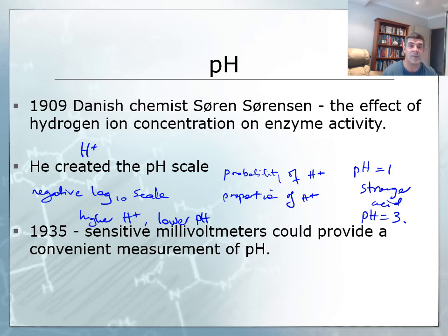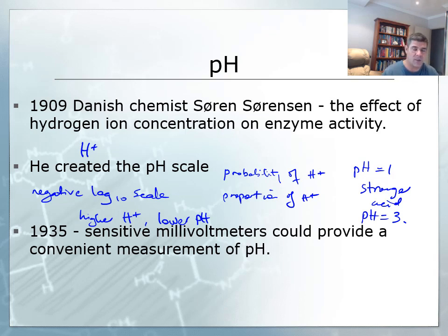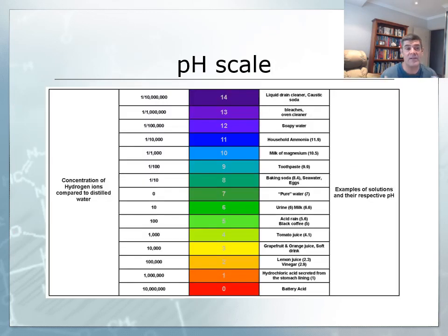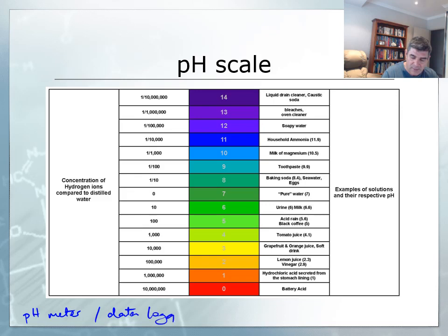It took a little while to build technology sufficient to conveniently measure pH. In the 1930s, scientists were able to develop sensitive millivolt meters, which use electrochemical means to measure pH. In the classroom, we have a number of ways of measuring pH, and you'll have the opportunity in the laboratory to explore pH through pH meters, data loggers, and also through universal indicator.